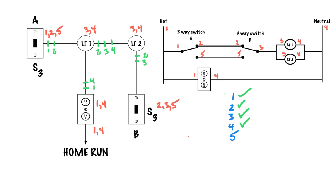Last number, five. I've got a five at three-way switch A and a five at three-way switch B. No other fives — no five at the lights or the receptacle. So I take my five through from switch A all the way through to switch B: five, five, and five. Check mark.